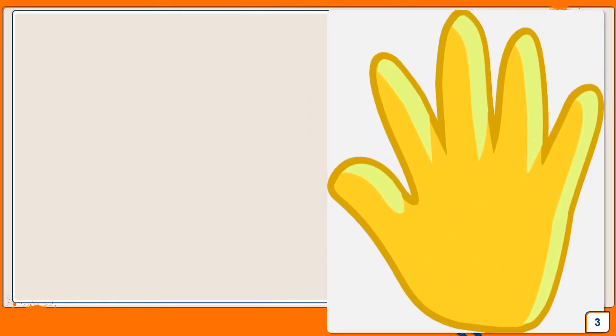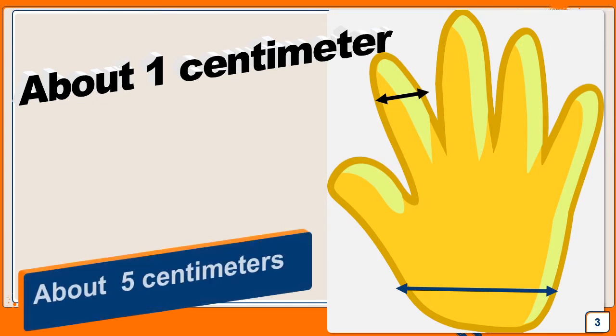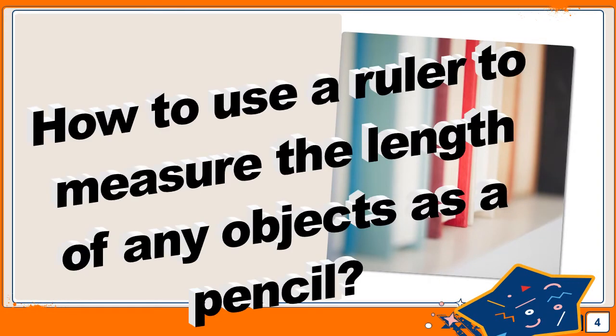Look at your hand and take a ruler in the other hand. If we measure the top of the finger, it would be about 1 centimeter. If we measure the palm of the hand, it will be about 5 centimeters. Now let's learn how to use a ruler to measure the length of any object, like pencils — we have two steps.